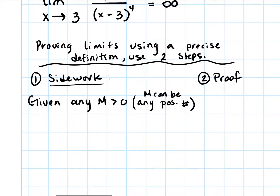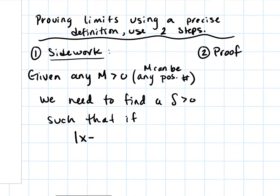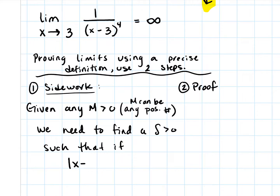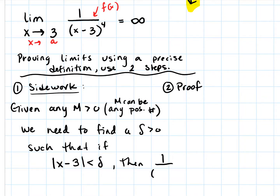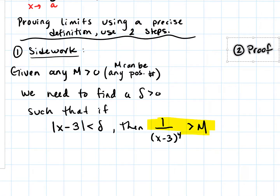In the side work, we ask: what do we need? Using the precise definition, given any M greater than zero — and remember M can be any positive number — we need to find a delta greater than zero such that if the absolute value of x minus 3 is less than delta, then 1 over (x minus 3) to the fourth will be greater than M. That needs to be the end result of my proof, so we work backwards from what we want to figure out what we need.